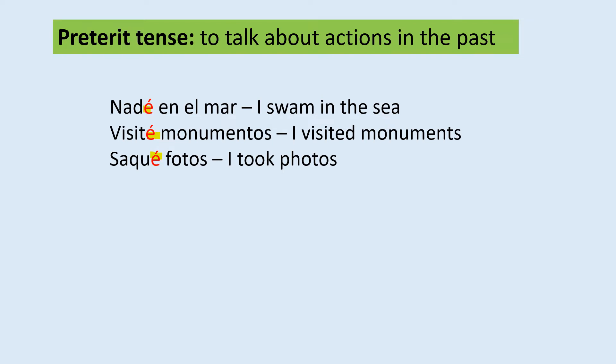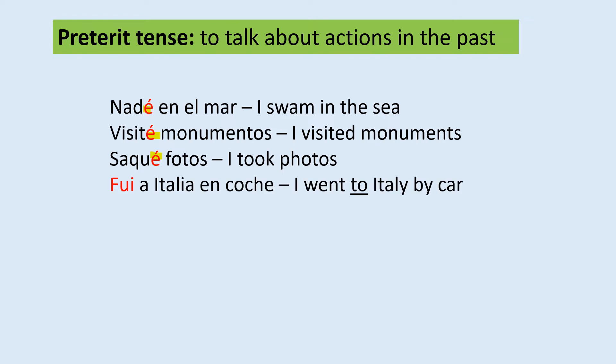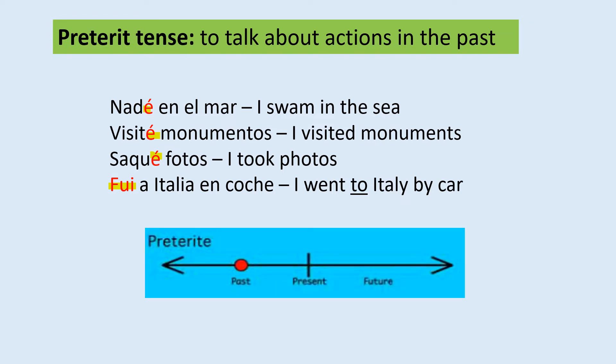We have also seen 'I went' — fui — an irregular form in the preterite tense. For example, fui a Italia en coche — I went to Italy by car. So we use the preterite tense to talk about actions in the past.